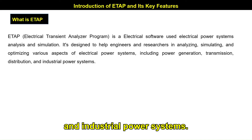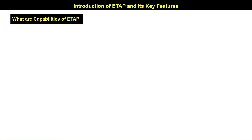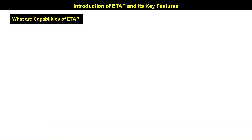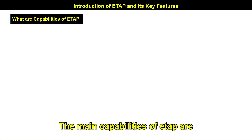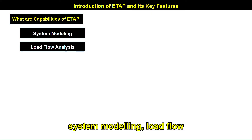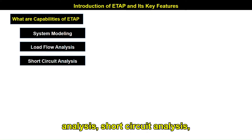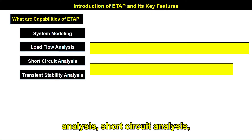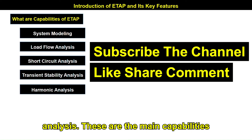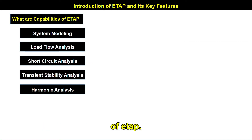ETAB covers power generation, transmission, distribution, and industrial power systems. The main capabilities of ETAB are system modeling, load flow analysis, short circuit analysis, transient stability analysis, and harmonic analysis. These are the main capabilities of ETAB.